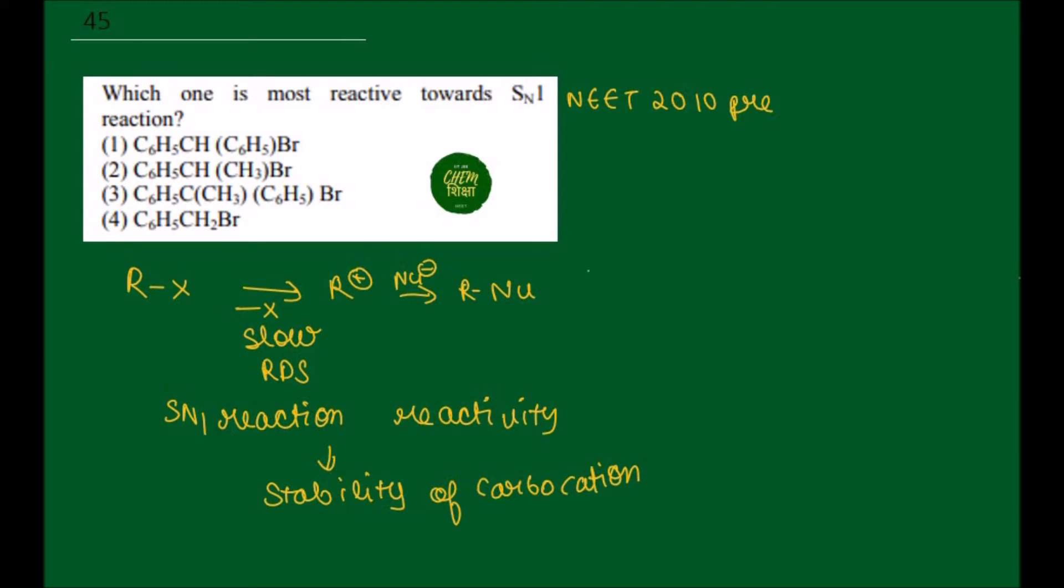What is the order of carbocation stability? Allyl or benzyl carbocation is more stable than 3 degree carbocation, then 2 degree, then 1 degree, then vinyl, and then phenyl.